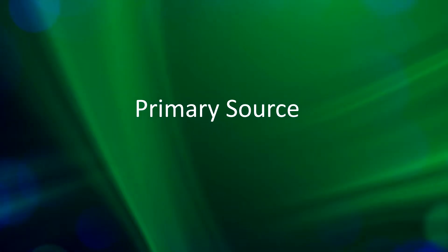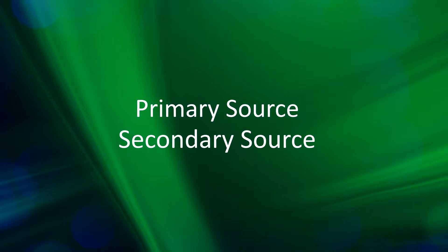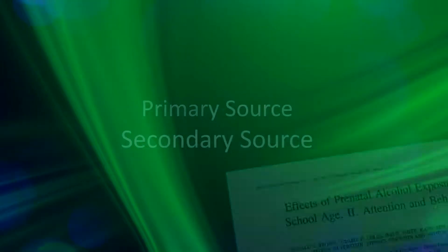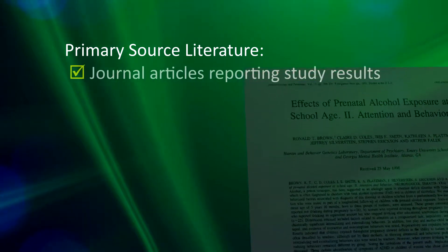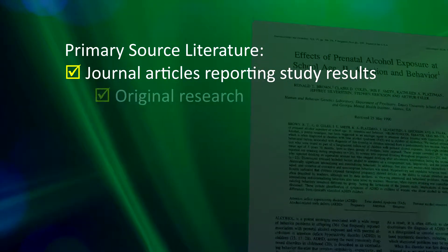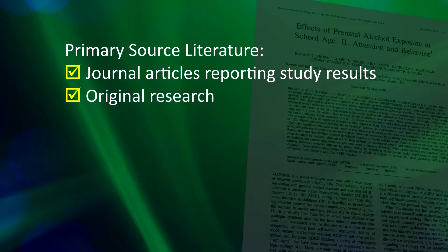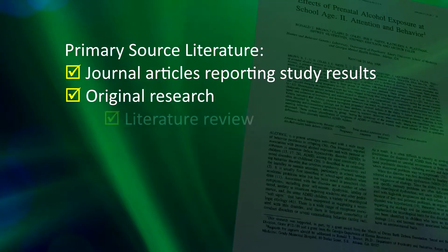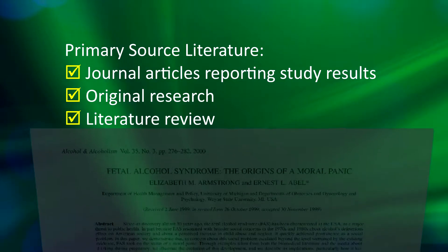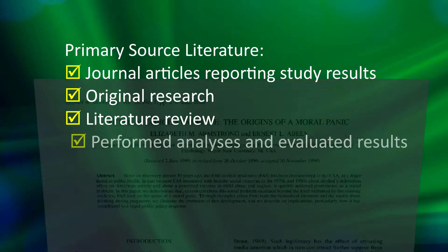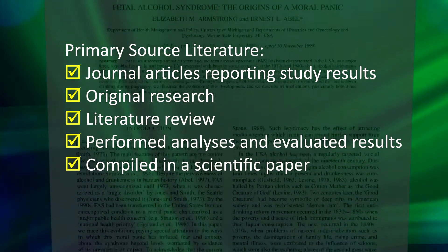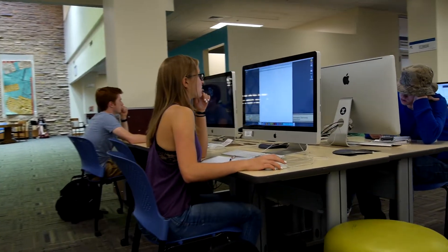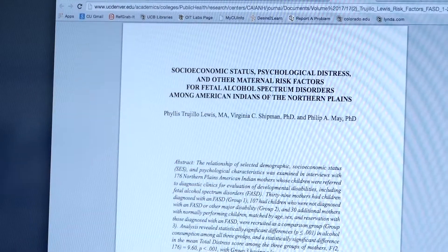Scientific literature falls into two broad categories: primary source and secondary source. Primary source scientific literature is, generally speaking, journal articles reporting study results. The authors conducted original research — in the same way that you are — they did a literature review, performed analysis, evaluated their results in the context of their literature review, and compiled it all in a paper consistent with scientific studies. Your literature search will focus only on primary source literature.